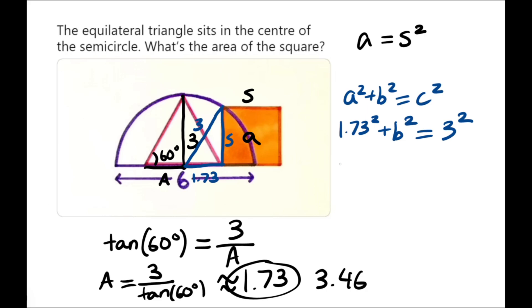So, we can rearrange the equation and just say, 3 squared minus 1.73 squared is equal to B squared. And this right here is going to be approximately, or pretty much, 6. And that's going to equal B squared.